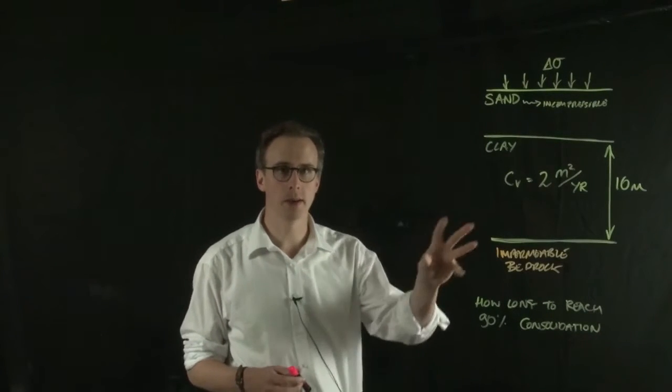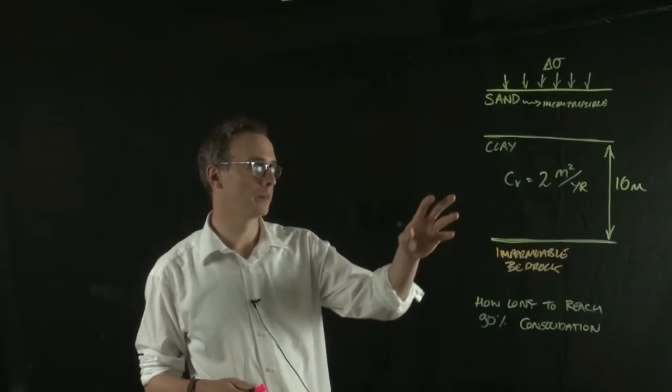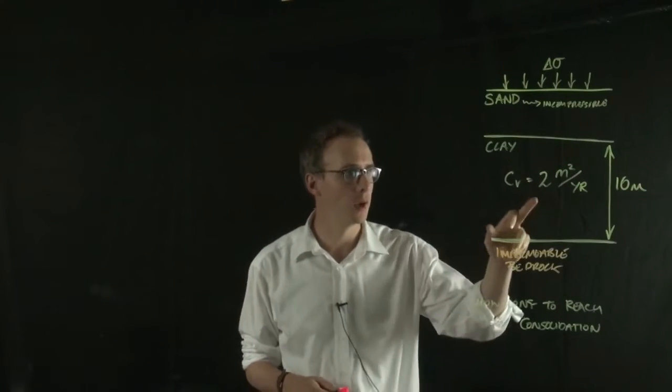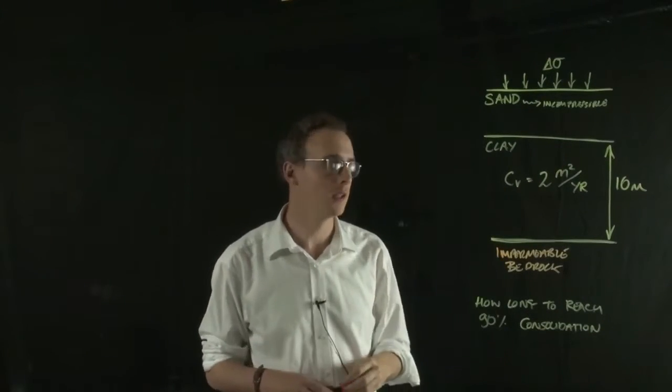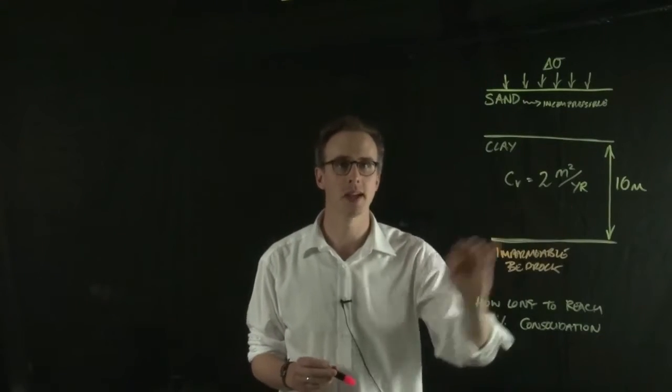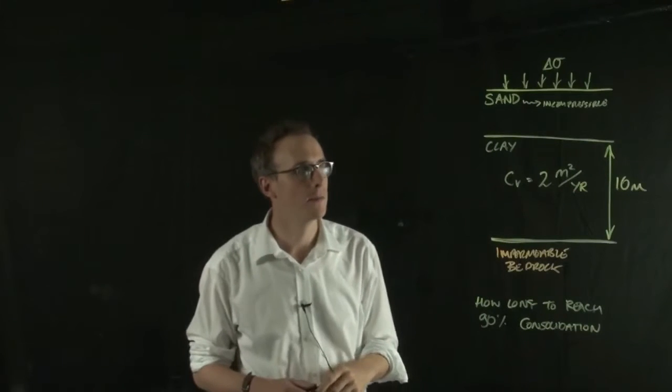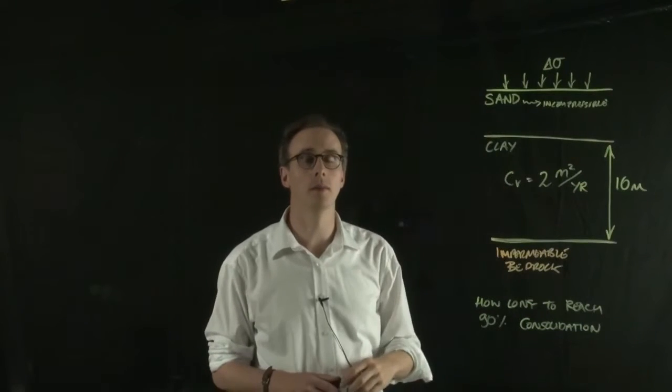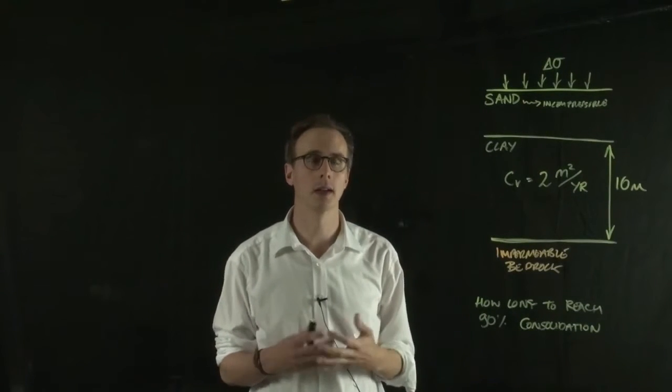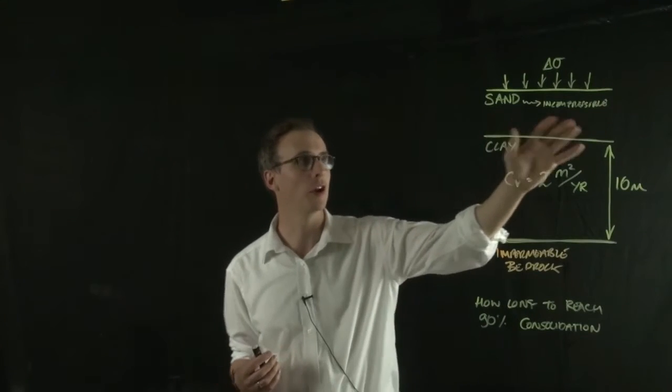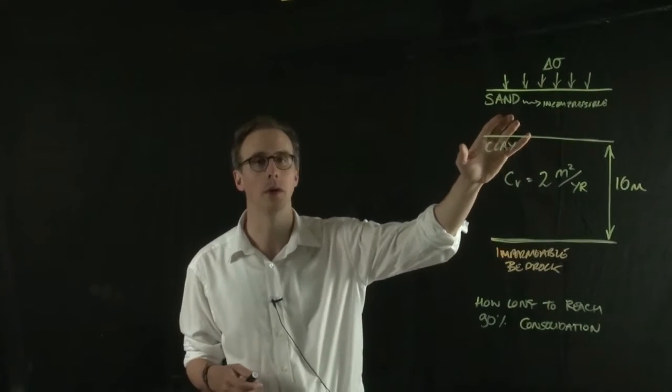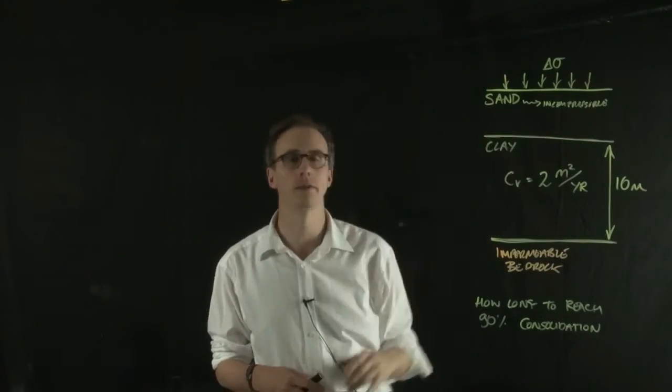Let's say we had an example like this where we had a layer of clay and we found out the CV value from tests. Let's say the clay was 10 meters thick and over that clay layer we had a sand which is incompressible but was highly permeable, so we knew that water could flow through the sand.